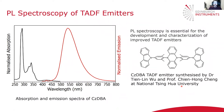The FLS1000 is ideal for characterizing these TADF emitters. All the examples here use the CZ-DBA emitter obtained through a collaboration, and the FLS1000 can be used to characterize the photophysical properties of these emitters.